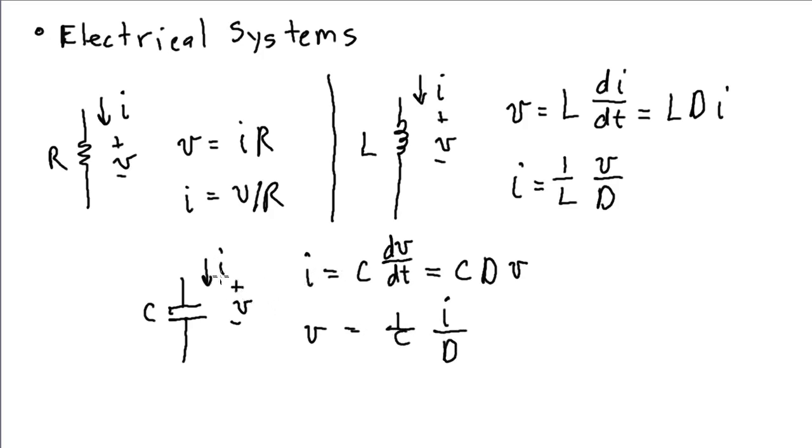That the current is actually flowing into the positively marked terminal of the voltage. If the current's actually flowing in the opposite direction, it's flowing into the terminal marked with the negative sign, each of these equations would have a corresponding negative sign in front of it. So these are all Ohm's Law type relationships.